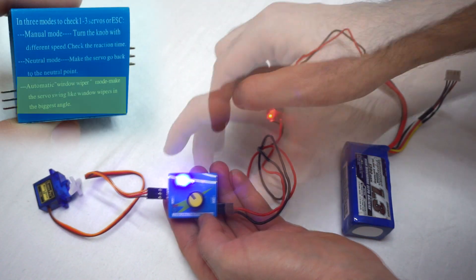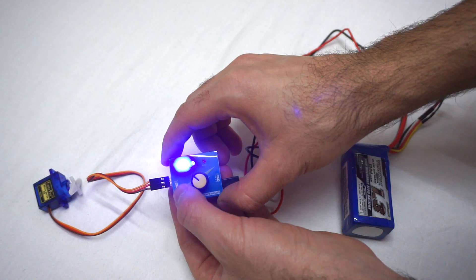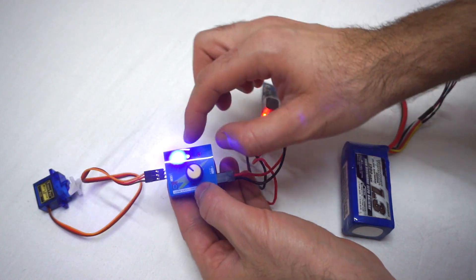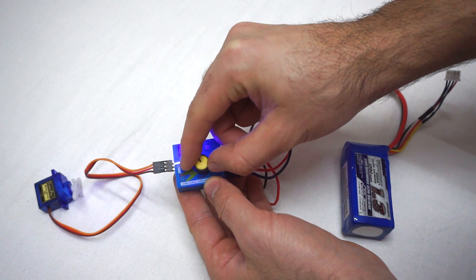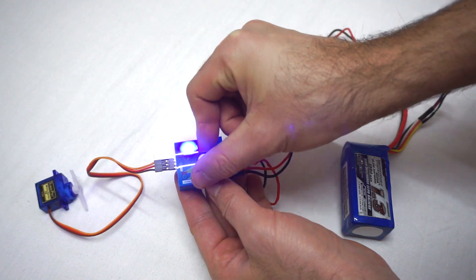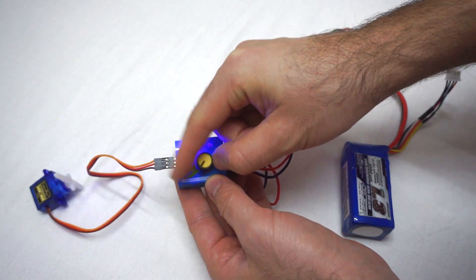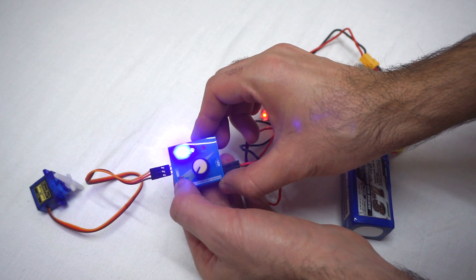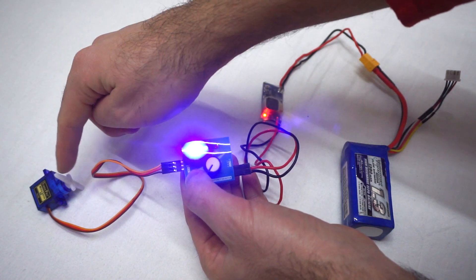If we rotate the potentiometer, the servo is moving from left to right. Let's go to the second one. That will center the servo to the middle. That's it.